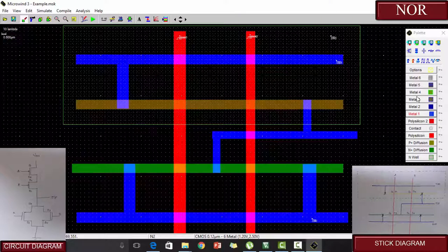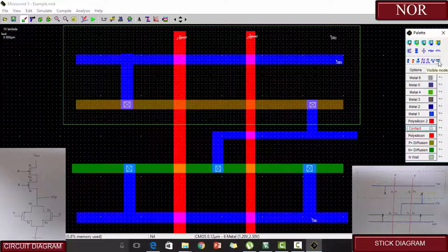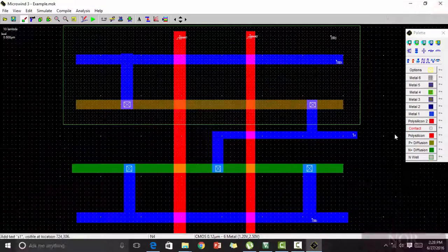In order to connect this diffusion to the metal, we need a contact. Now you can see the contacts are made. Now in order to see the output, the visible node from the palette is selected and the output is assigned.